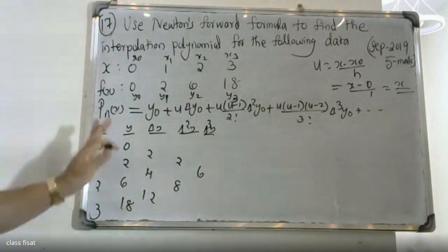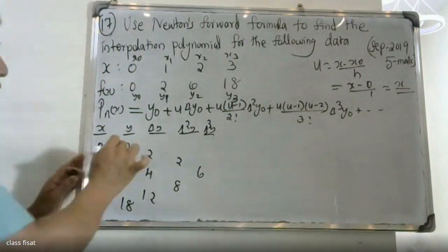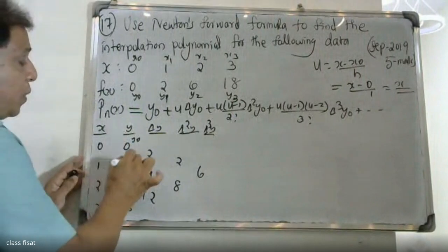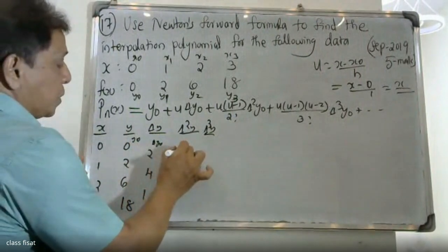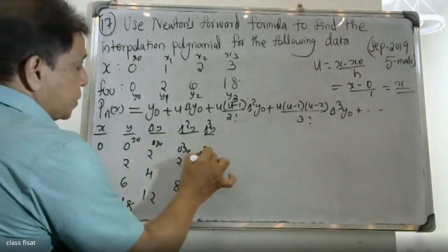This table is formed. This table is called y-note, this is del y-note, this is del square y-note, this is del-cubed y-note.